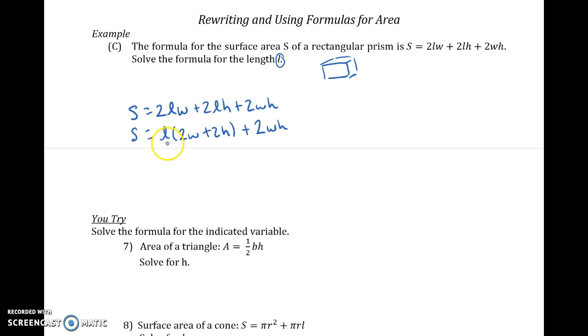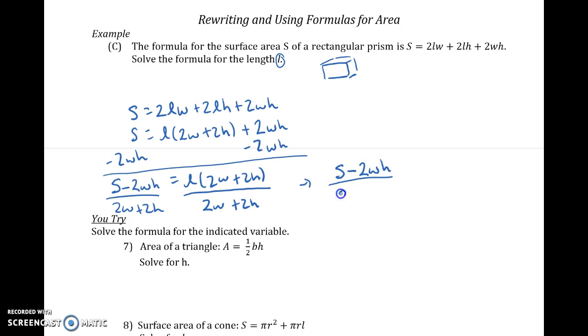And then remember, I want to get L by itself, so let's go ahead and get rid of any addition or subtraction first, just like always. So I'm going to get S minus 2WH equals L times 2W plus 2H. That's still in parentheses. And then finally, to get L completely by itself, we're going to divide by 2W plus 2H. And my final answer, my equation is going to be S minus 2WH over 2W plus 2H equals L.